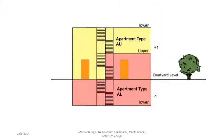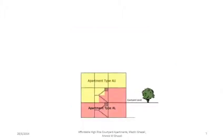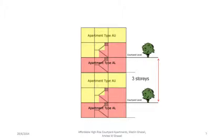This is looking at the pair of apartments from the front. As you can see, the pair of two-storey apartments take up three floors, but both can be accessed from the courtyard level. This is the same pair of apartments but looking at them from the side.